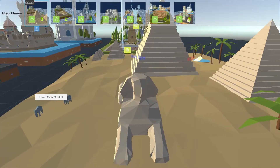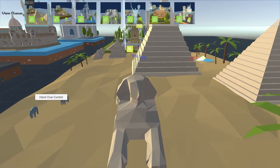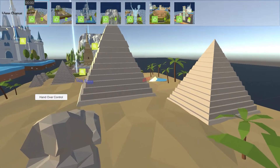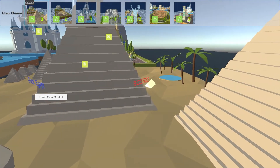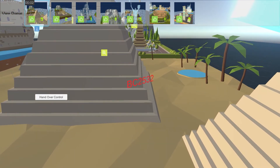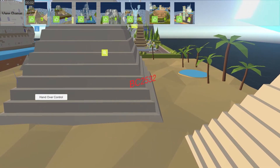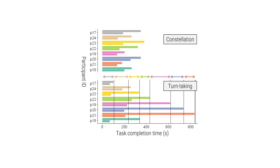We conducted two online evaluation sessions, each with eight concurrent users, to compare Constellation with a turn-taking protocol. Results showed that Constellation was considerably faster in completing the users' requests and that participants found it easy to understand.